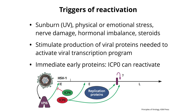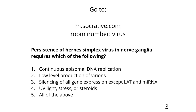The next question: persistence of herpes simplex virus in nerve ganglia requires which of the following? Continuous episomal DNA replication; low-level production of virions; silencing of all gene expression except LAT and microRNA; UV light, stress, or steroids; all of the above? 60% of you got the right answer: silencing of all gene expression except LAT and microRNA. You don't have continuous DNA replication — during the latency period you have just that one copy of DNA and the neuron doesn't have to replicate. You don't have low-level production of virions — this is different from polyoma, hepatitis B, and hepatitis C. UV light, stress, or steroids is for reactivation, not for persistence.